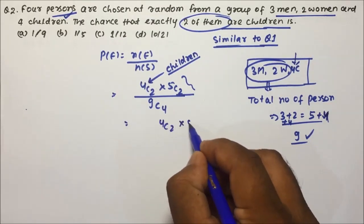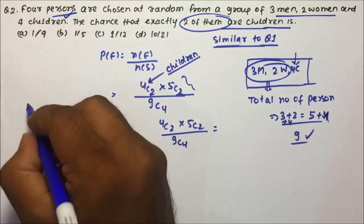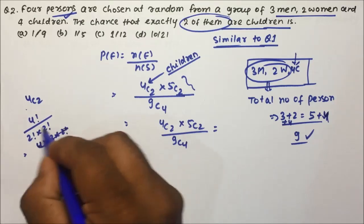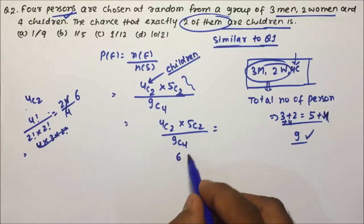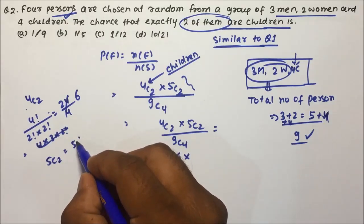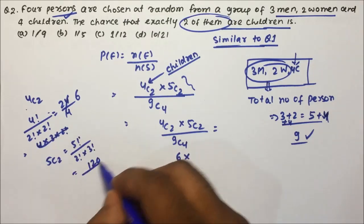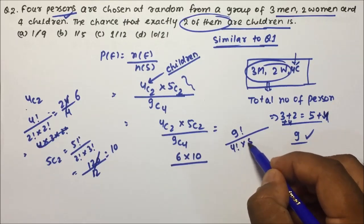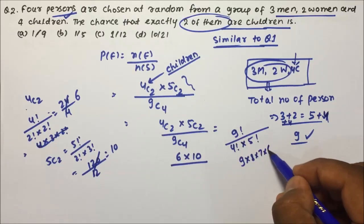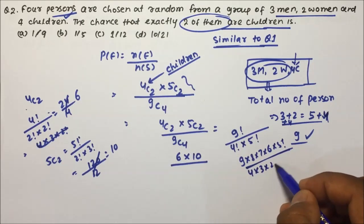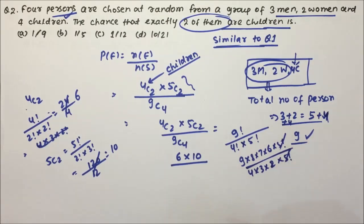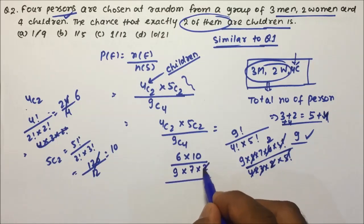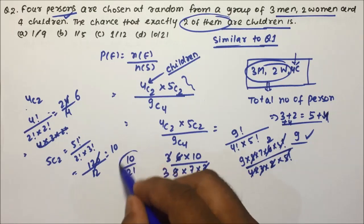So the calculation is 4C2 into 5C2 divided by 9C4. 4C2 = 4 factorial divided by 2 factorial into 2 factorial = 24 divided by 4 = 6. 5C2 = 5 factorial divided by 2 factorial into 3 factorial = 120 divided by 12 = 10. 9C4 = 9 factorial divided by 4 factorial into 5 factorial = 9 into 8 into 7 into 6 divided by 4 into 3 into 2 = 126. So 6 into 10 divided by 126 simplifies to 10 divided by 21.